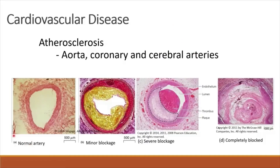Figure A shows a normal artery. This is the lumen of the artery through which blood flows. Figure B shows minor blockage of the artery. You can see here lipid accumulation in the wall of the artery.